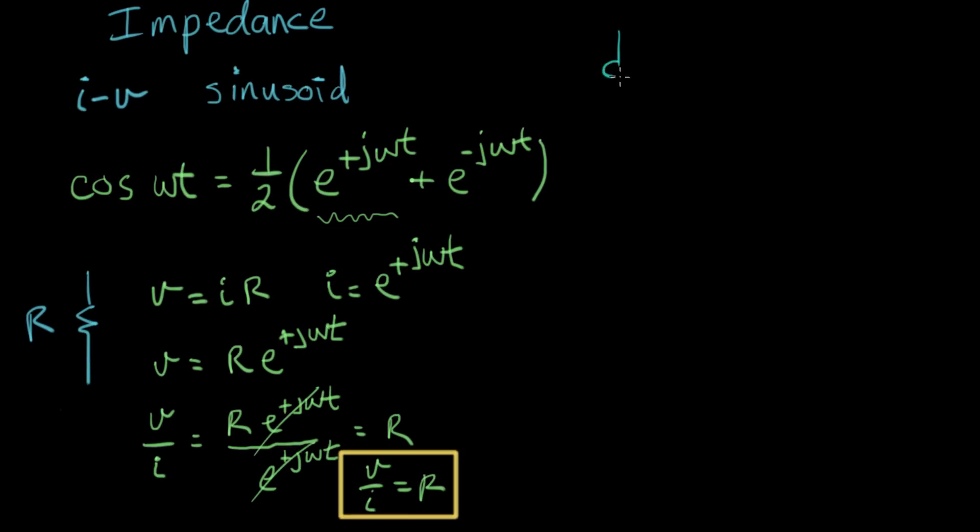This is going to get more interesting now as we do inductors and capacitors. So let's do an inductor. It has a value of L henrys. And for an inductor, we know that voltage equals L di dt. And let's do the same thing again. Let's let I equal e to the plus j omega t.